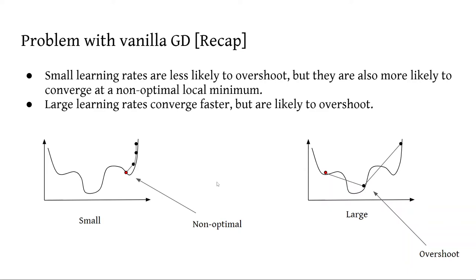On the other hand, large learning rates converge much faster, but are also, at the same time, much more likely to overshoot, as you can see in this diagram. Where it should have converged here, but it overshot, so it converged here instead.